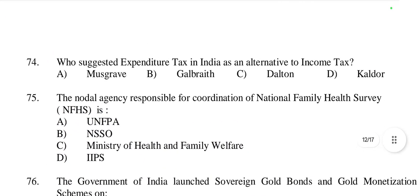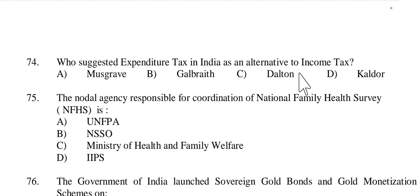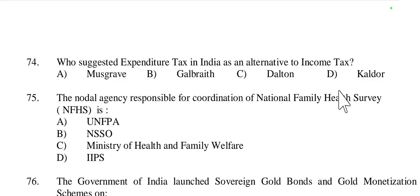Question 74: Who suggested expenditure tax in India as an alternative to income tax — Musgrave, Galbraith, Dalton, or Kaldor? It was suggested by Kaldor. So option D is right.